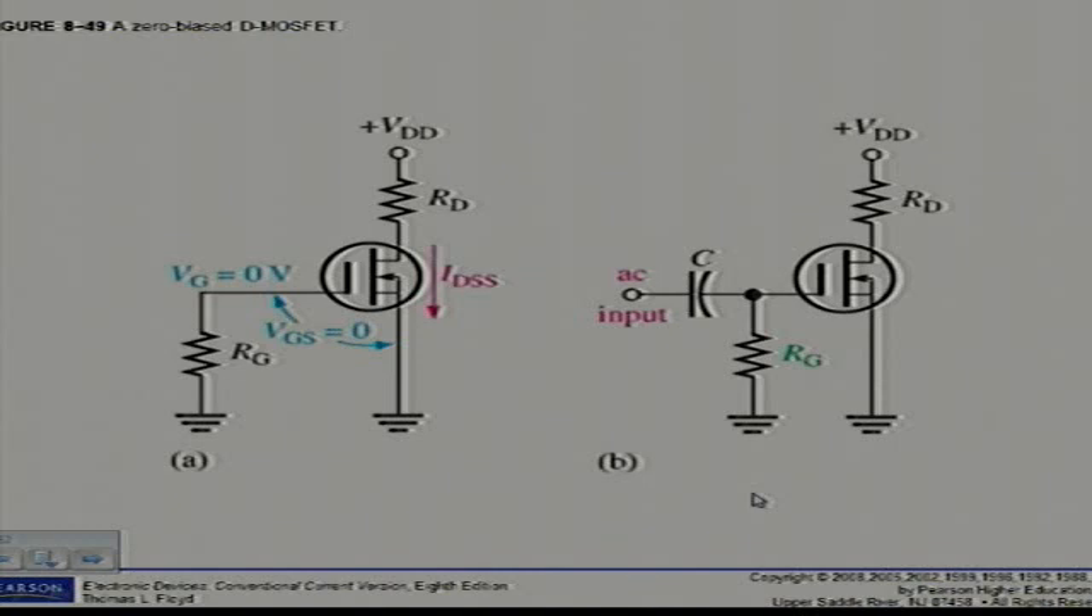Again here, the purpose of RG, as we've seen in previous section as well, is to accommodate an AC signal input by isolating it from ground as shown in figure 8.49B. Since there is no DC gate current, RG does not affect the zero gate to source voltage.